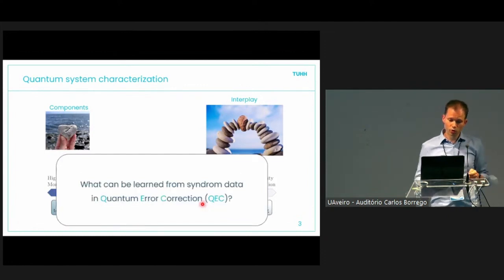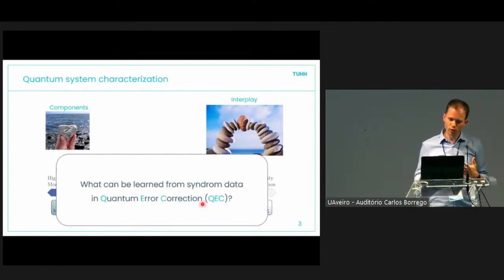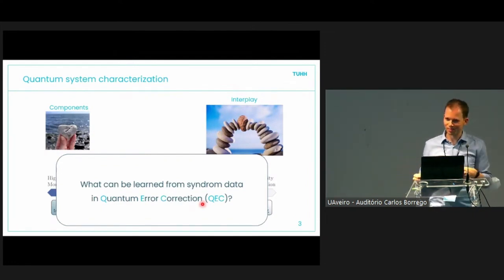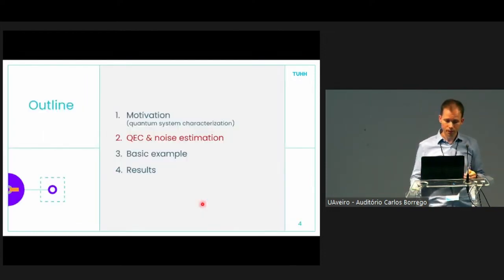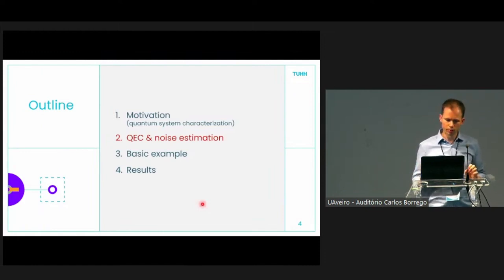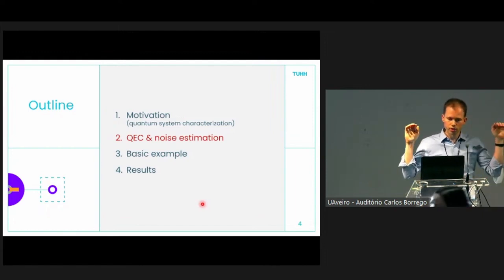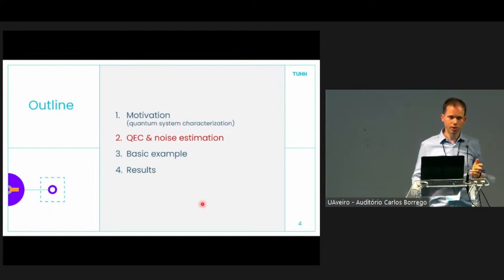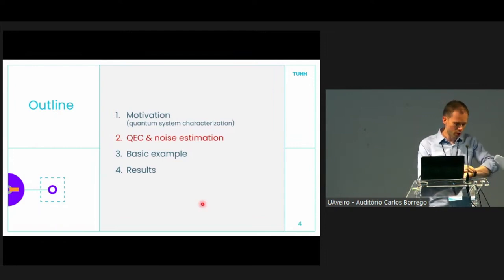These methods are typically run before you actually do something with a quantum computer, and they are not tailored to any specific application. What Thomas and I asked is: in quantum error correction you have measurement data for other reasons, but you get it anyway — what can you learn from that data? Is there any system characterization task you can solve with it? That's exactly what I will talk about.